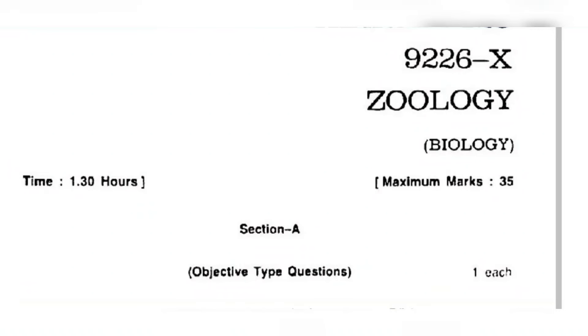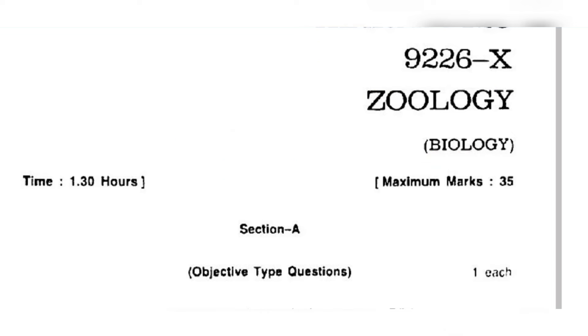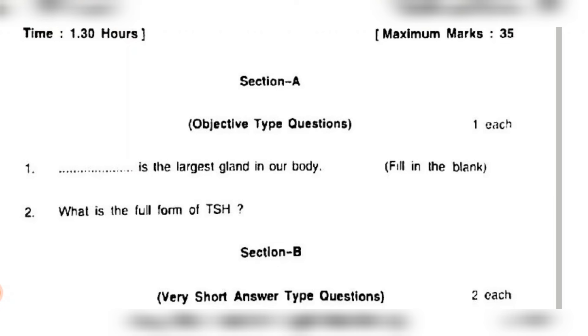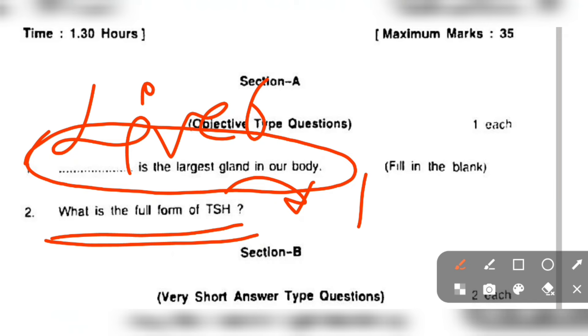Assalamu alaikum, welcome back to the channel dear students. Hope you all are doing good. In this particular video we'll be going to discuss the zoology paper, this is the X-series from the 2023 year. So let us start the first section, we have the objective questions. For example, which is the largest gland in our body? It is the liver. Then what is the full form of TSH? That is thyroid stimulating hormone.